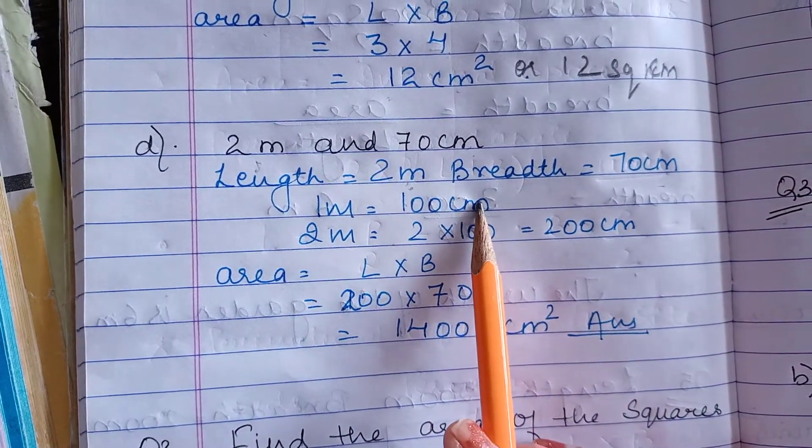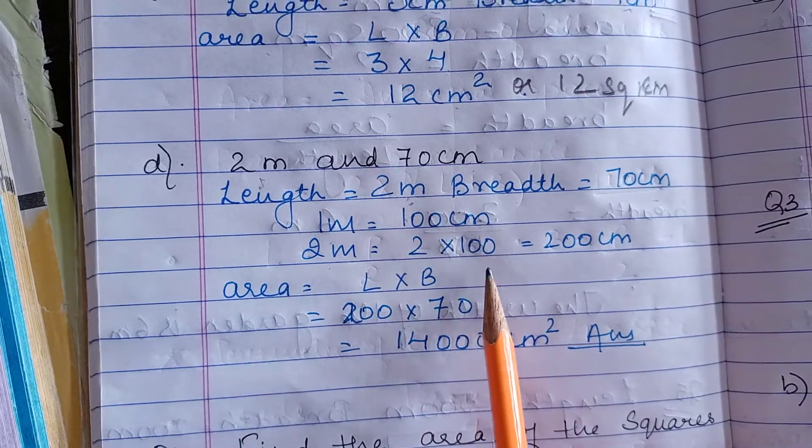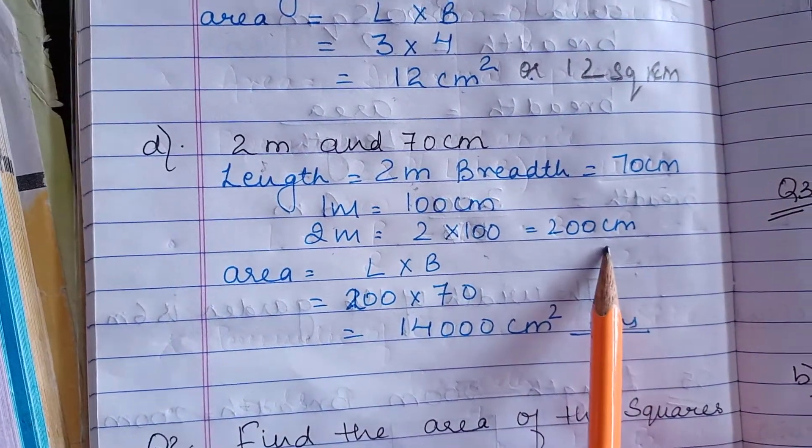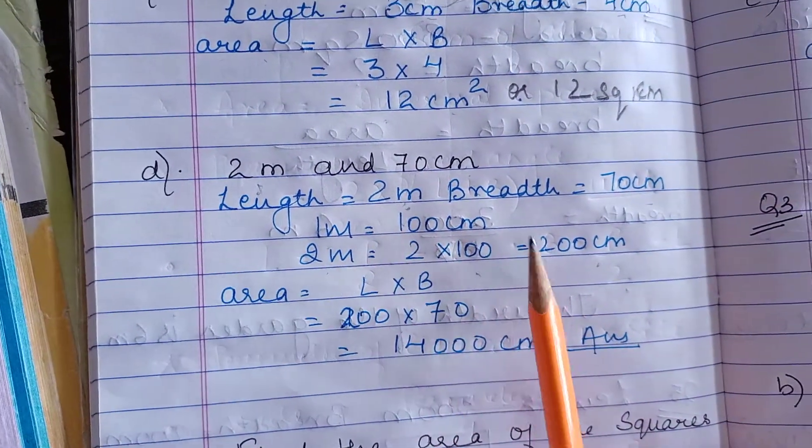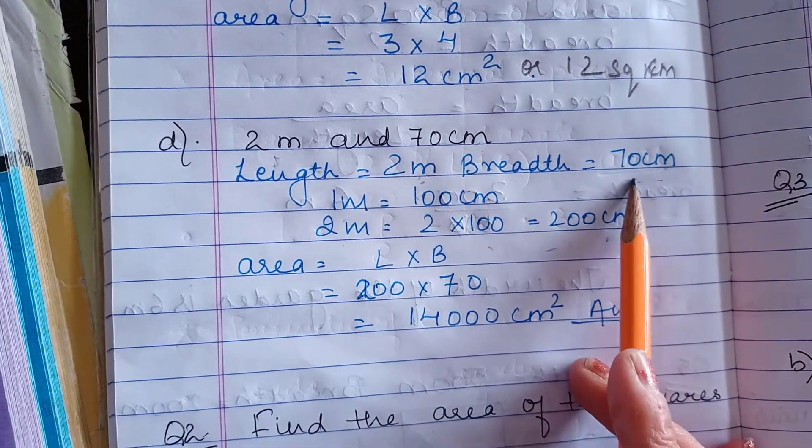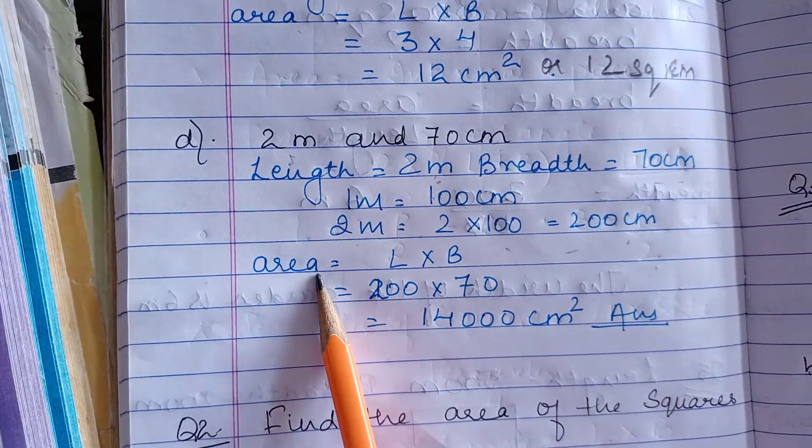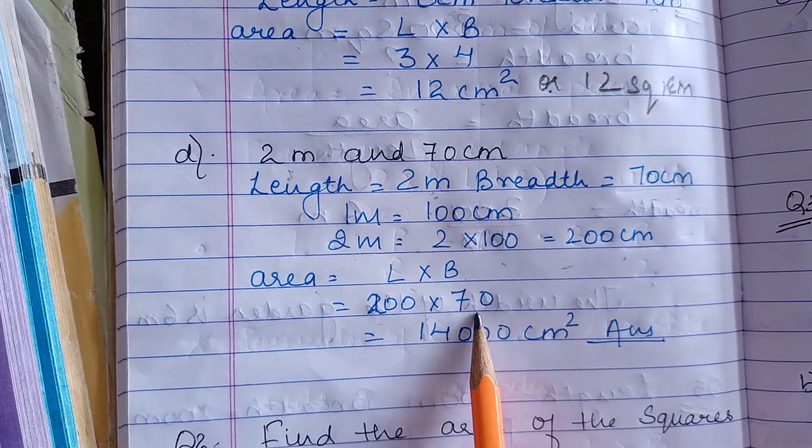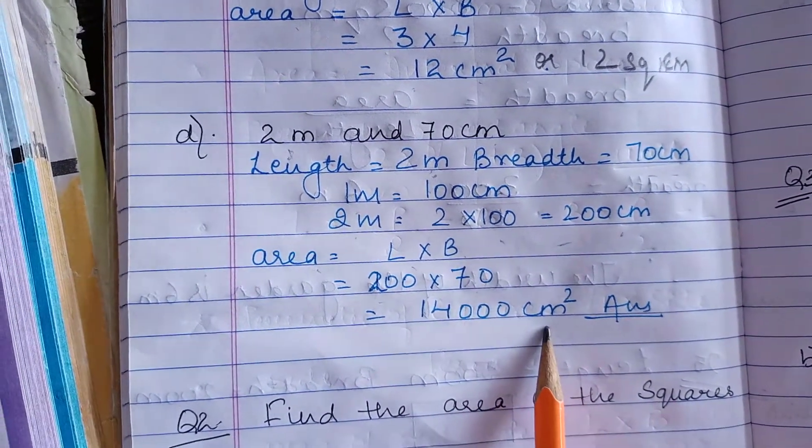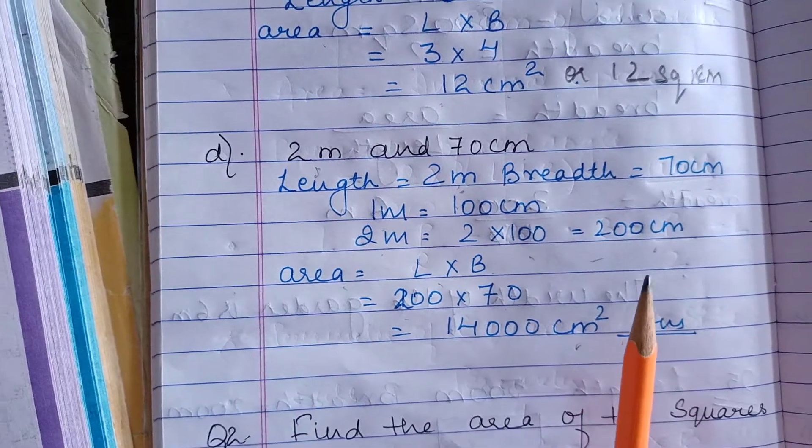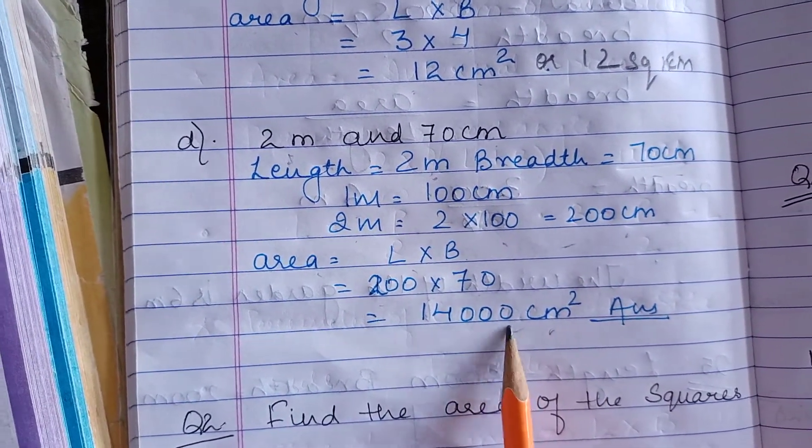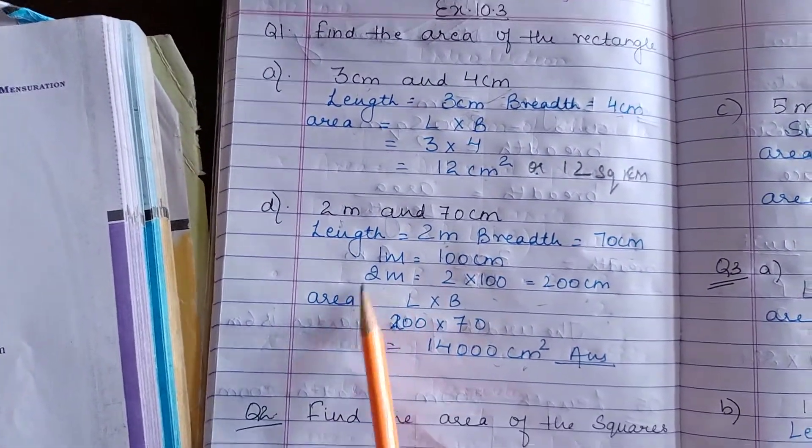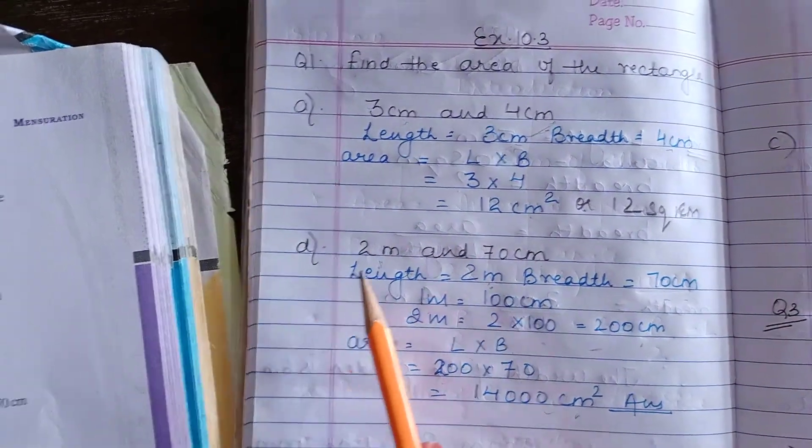1 m is equal to 100 cm, so 2 m is equal to 200 cm. Therefore length is 200 and breadth is 70 only. Formula of area is length into breadth. Multiply both, find the product and you will get the answer. And remember the unit is now cm². So this was your question number 1, parts A and D.